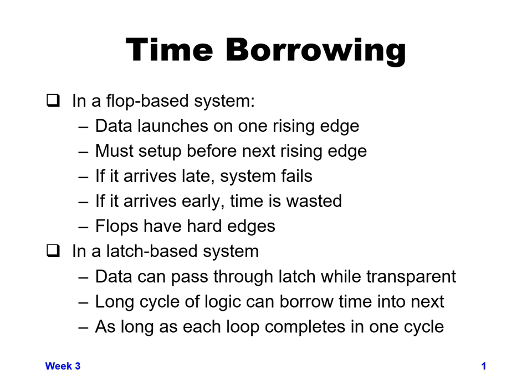First I'll talk about how this might be in effect in a flop-based system and then a latch-based system. In a flop-based system, remember that your data launches out of any given flop on the rising edge of clock, then goes through some set of combinational logic, and it eventually must set up to the next downstream flop before the next rising edge of clock. If it arrives after the next rising edge of clock, it got there too late, that data does not get captured in the downstream flop, and your system fails. So you require for every set of flops the combinational logic between flops to be less than one cycle worth of time.